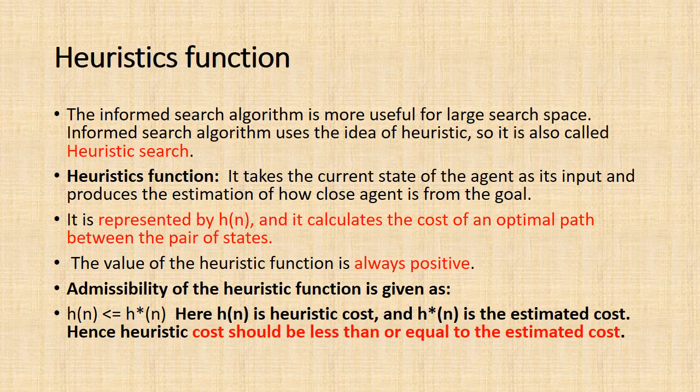Heuristic function estimates how close a state is to the goal. It is represented by h(n), and it calculates the cost of an optimal path between the pair of states. The value of the heuristic function is always positive. Admissibility of the heuristic function is given as h(n) ≤ h*(n). Here h(n) is heuristic cost, and h*(n) is the estimated cost. Hence heuristic cost should be less than or equal to the estimated cost.